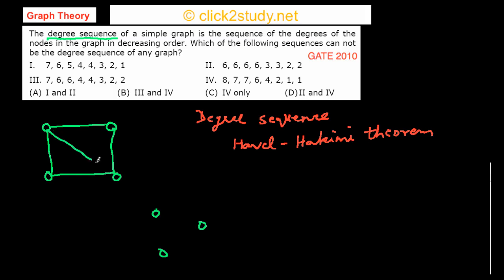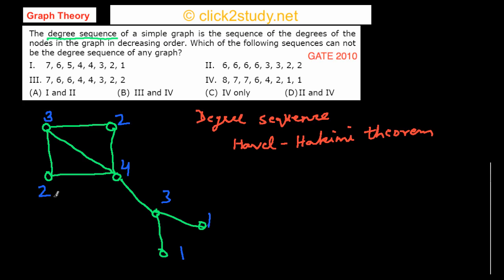Suppose there are edges here, here, here, and so on — this is the graph. Now I'm going to write the degree of each vertex beside it. This vertex has a degree of 3, this one has degree 2, this one has degree 4, this one has degree 3, this one has degree 1, this one has degree 1, and this one has a degree of 2.